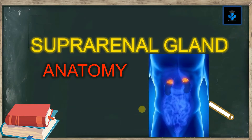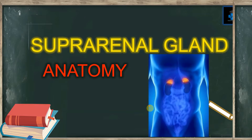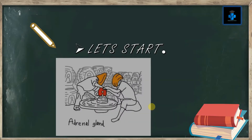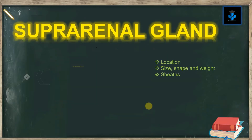Hey guys, welcome to Medifaction. Today let's learn about the anatomy of the suprarenal gland. The suprarenal gland is also known as the adrenal gland, which is an endocrine gland that produces a variety of hormones including adrenalin and the steroids aldosterone and cortisol.